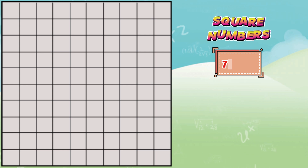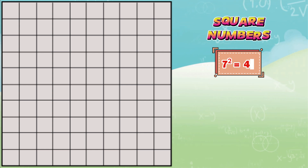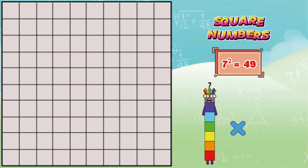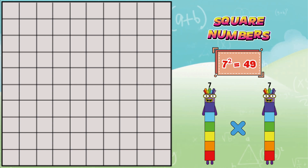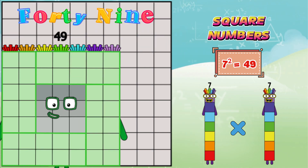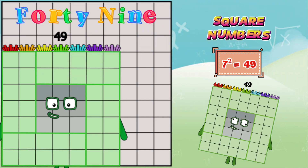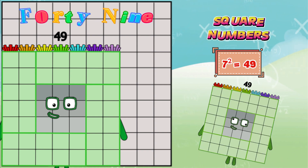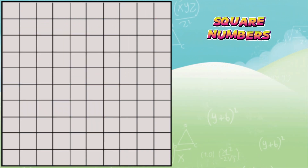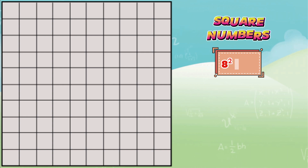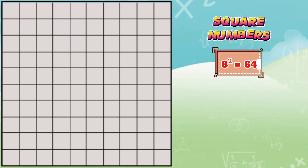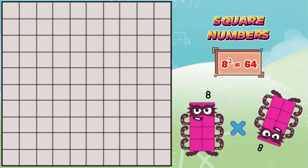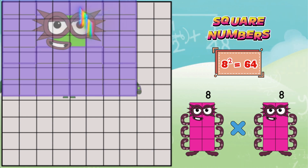Seven squared is equals to forty-nine, or seven multiplied by seven, is equals to forty-nine. Eight squared is equals to sixty-four, or eight multiplied by eight, is equals to sixty-four.